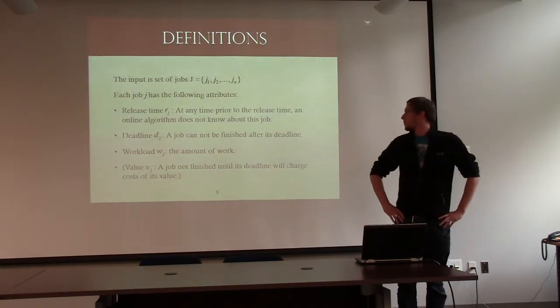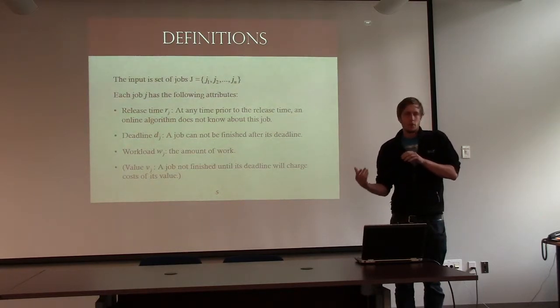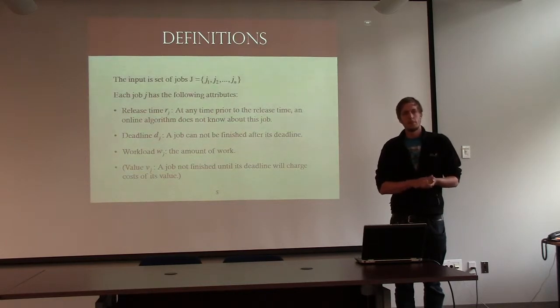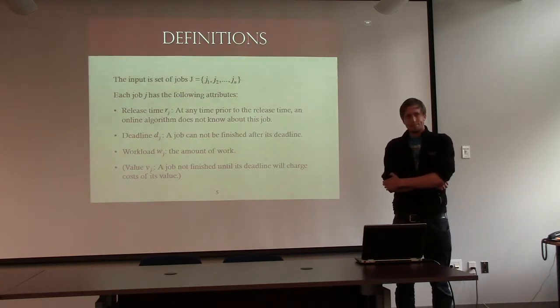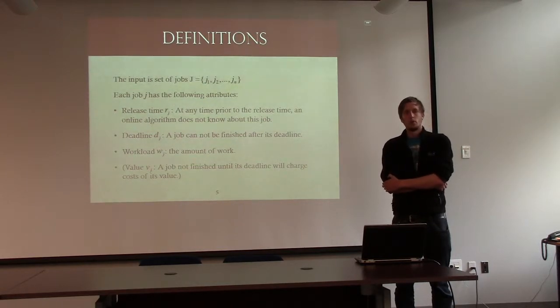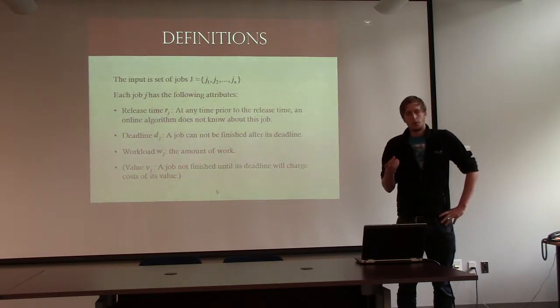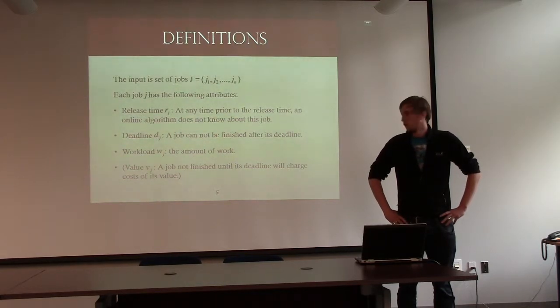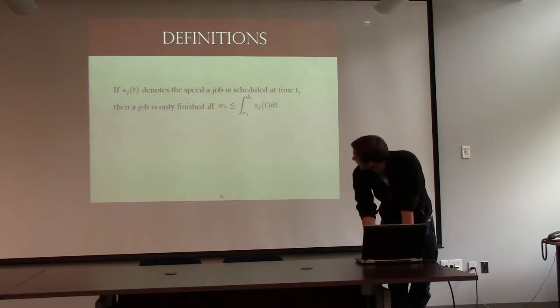And now the definition of the problem. So, you're given N jobs, they will arrive over time, and all of those jobs have certain properties. One of the properties is the release time. You don't know anything about the job before it's released. You also have a deadline, and this is a hard deadline. So, you have to schedule, if you want to complete the job, you have to schedule it within its release time and deadline. If you don't do it, you have to pay a certain amount. A job comes with a workload, and that could be something like the number of instructions you have to run on your CPU. And in some models, we also have a value. So, if you're allowed to reject some jobs, then the value is going to be charged. It's kind of a loss of income.